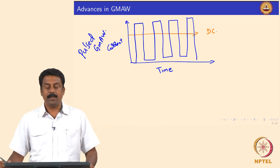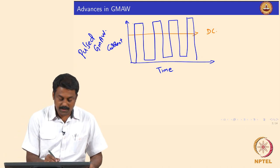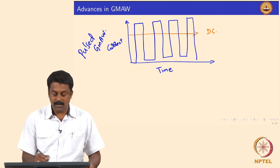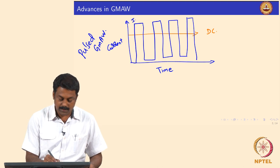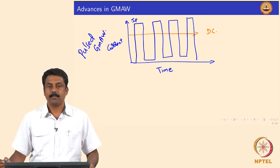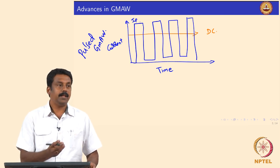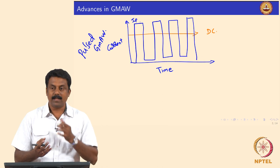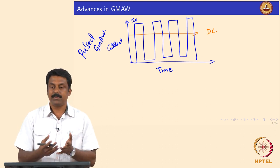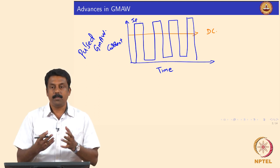The advantage of pulsing is that we reach a much higher current than the spray transition current during pulsing — this is known as the pulse current. By doing so, we can form a droplet and, because of the high current, create enough Lorentz force to transfer one droplet per pulse.